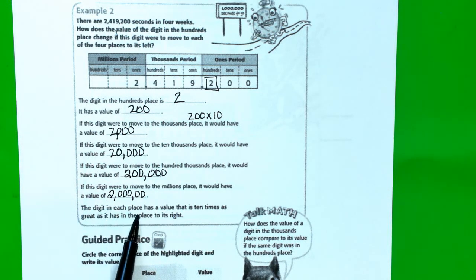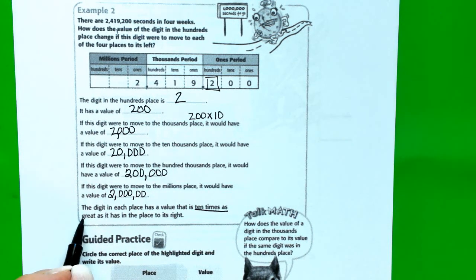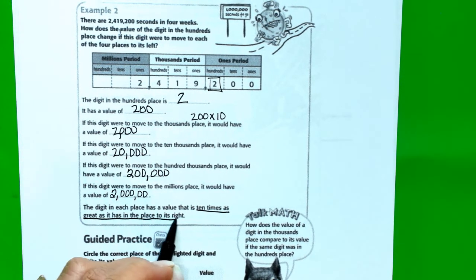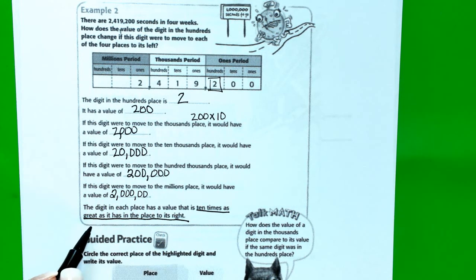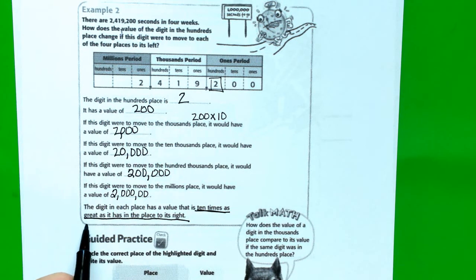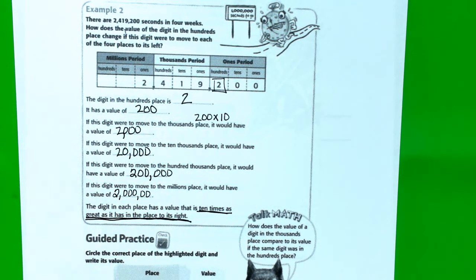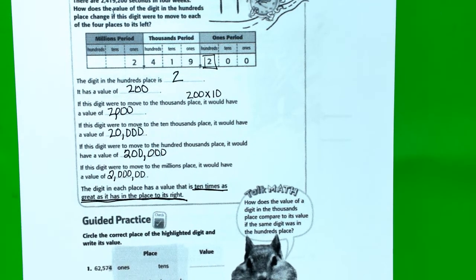Again, the digit in each place has a value that is 10 times as great as it has in the place to the right. You guys should highlight that because this language is going to show up a lot in the future. Okay?